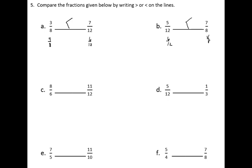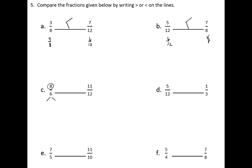If I look at the fractions in problem C, I start with 8 sixths and compare it to 11 twelfths. Because 8 is greater than 6, that tells me this fraction is greater than 1 whole. In fact, if I break it down with a number bond, I can show it as 6 sixths and 2 sixths, which is the same as 1 and 2 sixths. Because it's greater than 1 whole and 11 twelfths is less than 1 whole, then 11 twelfths has to be less than 8 sixths.